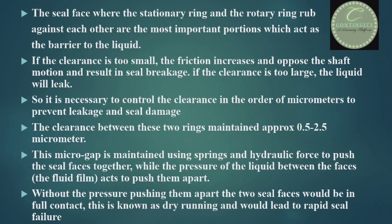The surfaces where the stationary ring and the rotary ring rub against each other are known as seal faces. These are the most important portions, acting as the barrier to the liquid. If the clearance is too small, friction increases and opposes shaft motion, resulting in seal breakage. If the clearance is too large, liquid will leak. The clearance is maintained at approximately 0.5 to 2.5 micrometers.